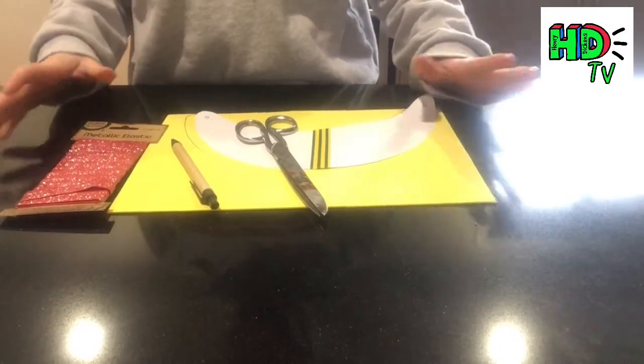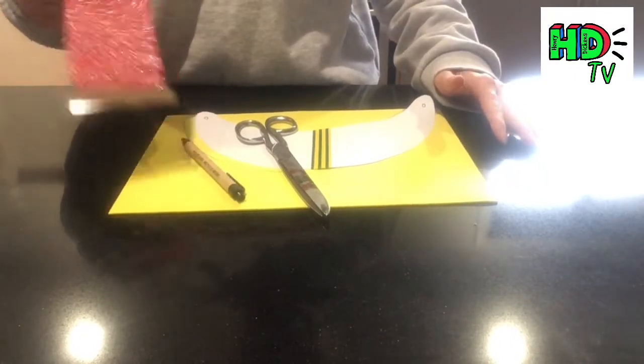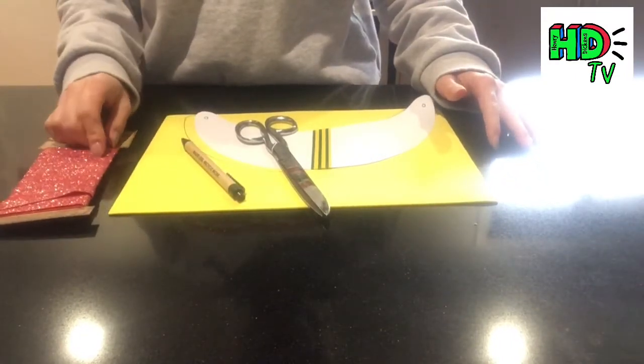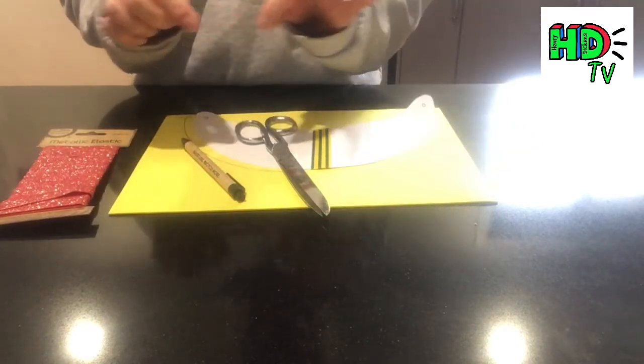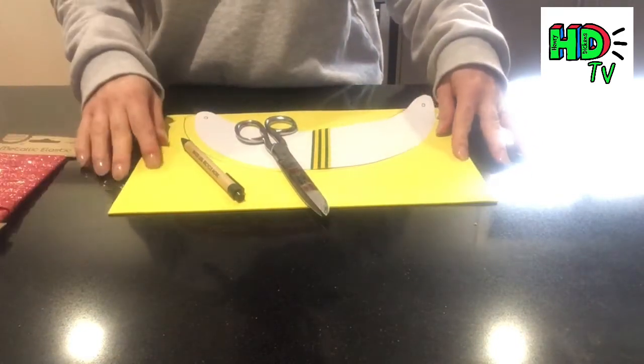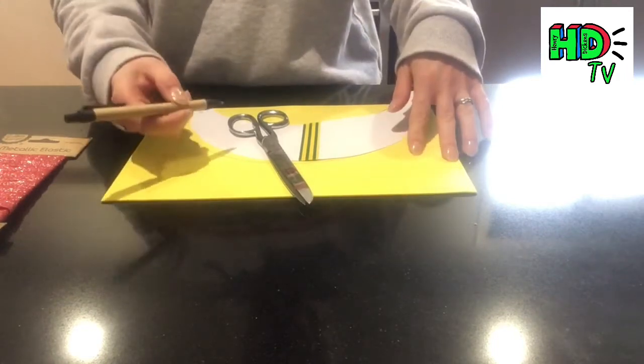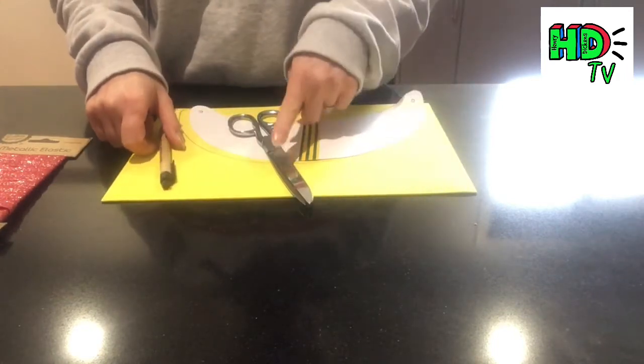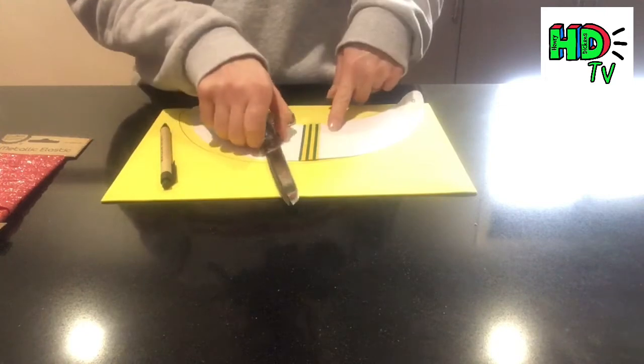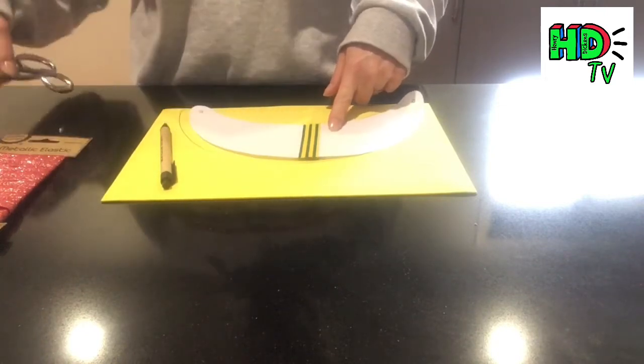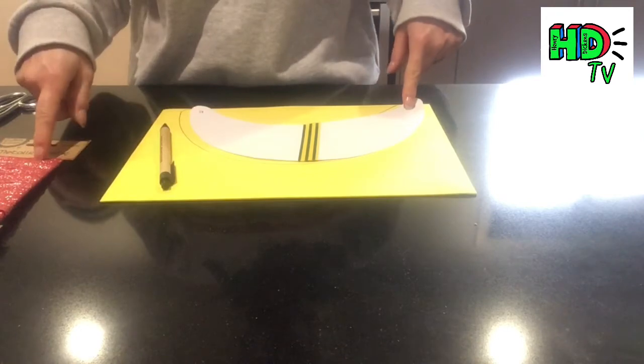To make your sun visor, you'll need some elastic (I've got this funky colored one here, but you can just use elastic string), a foam sheet (I've got this yellow one here), a pen or pencil to mark on it, a pair of scissors, a piece of paper to make a template, and a hole punch to make holes for your elastic.